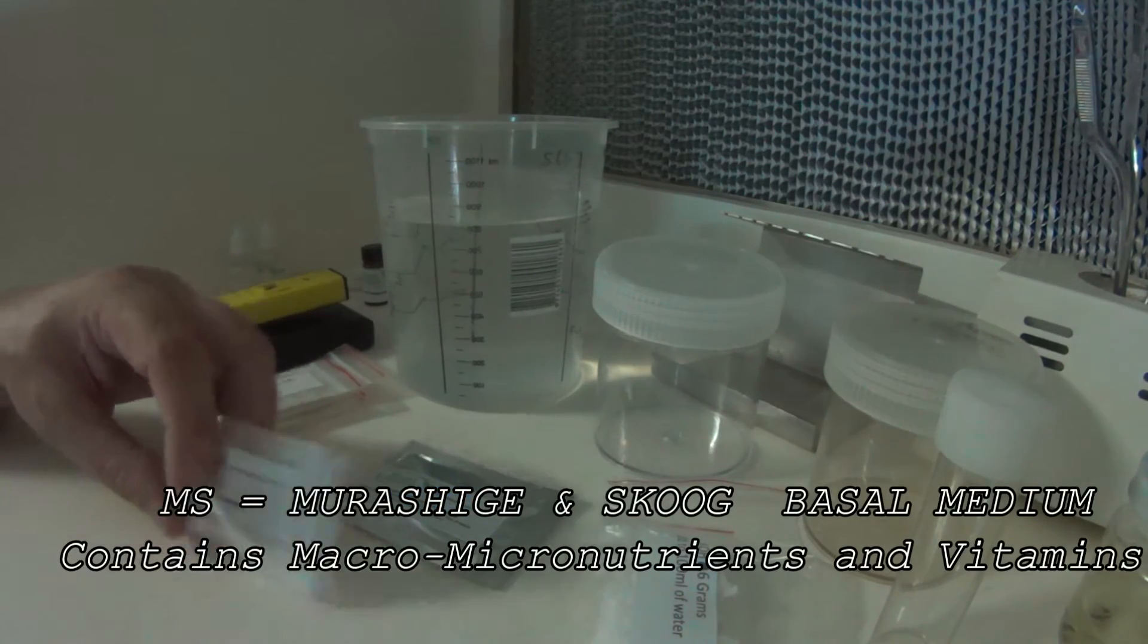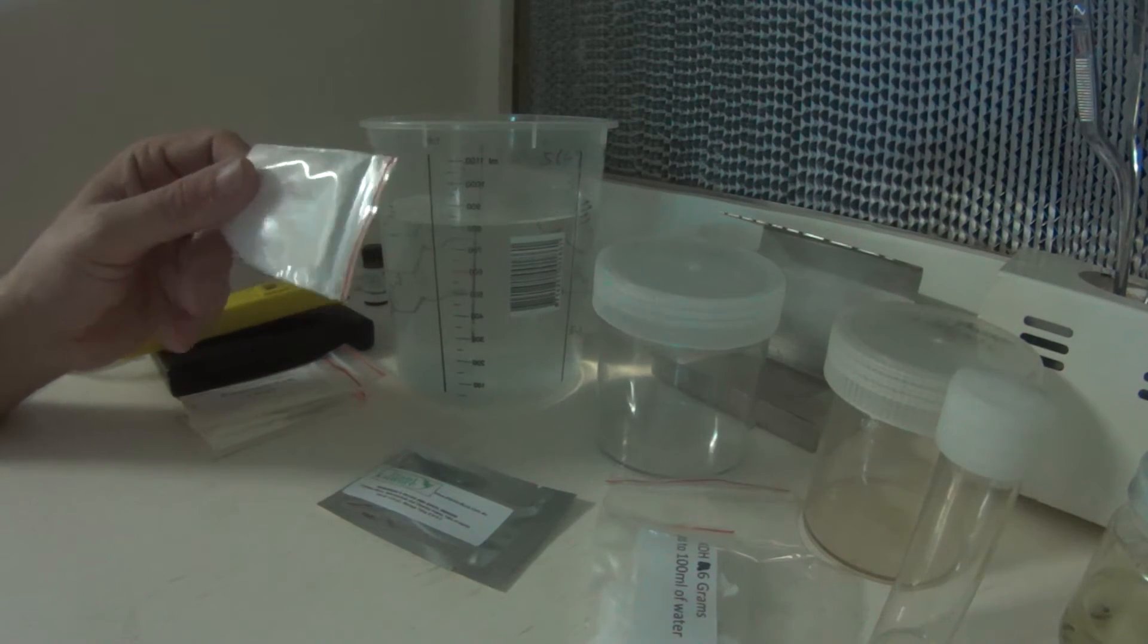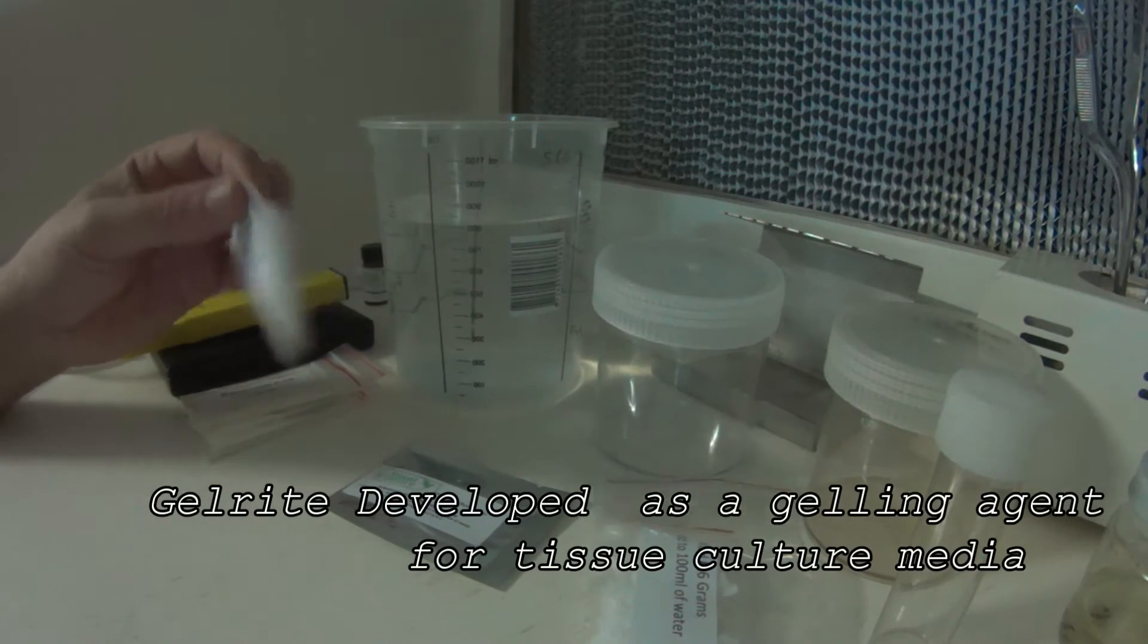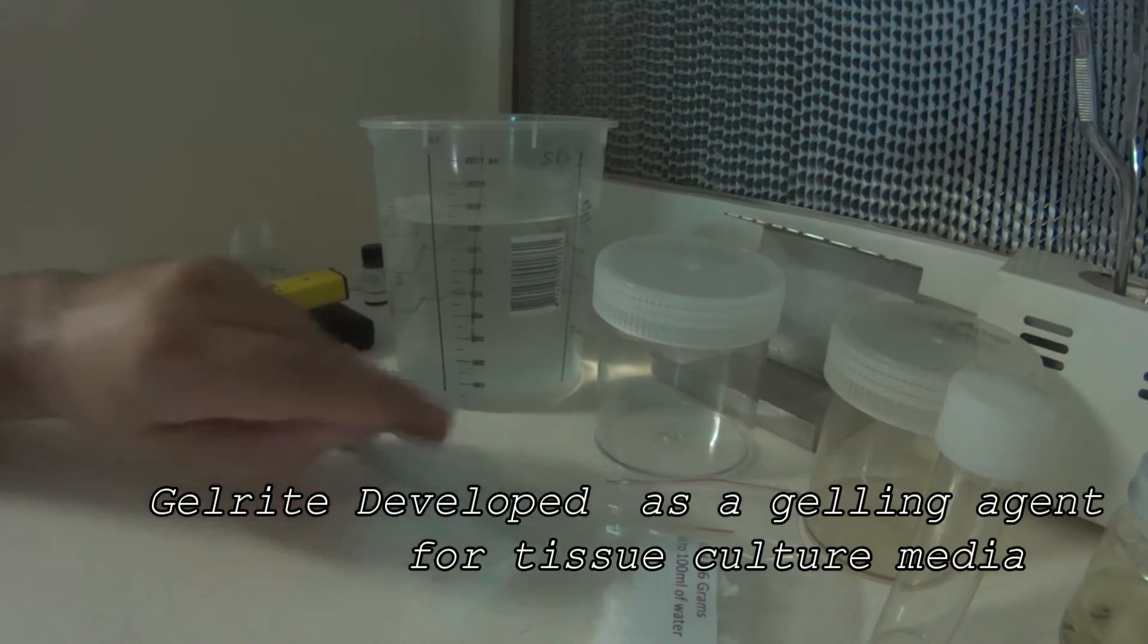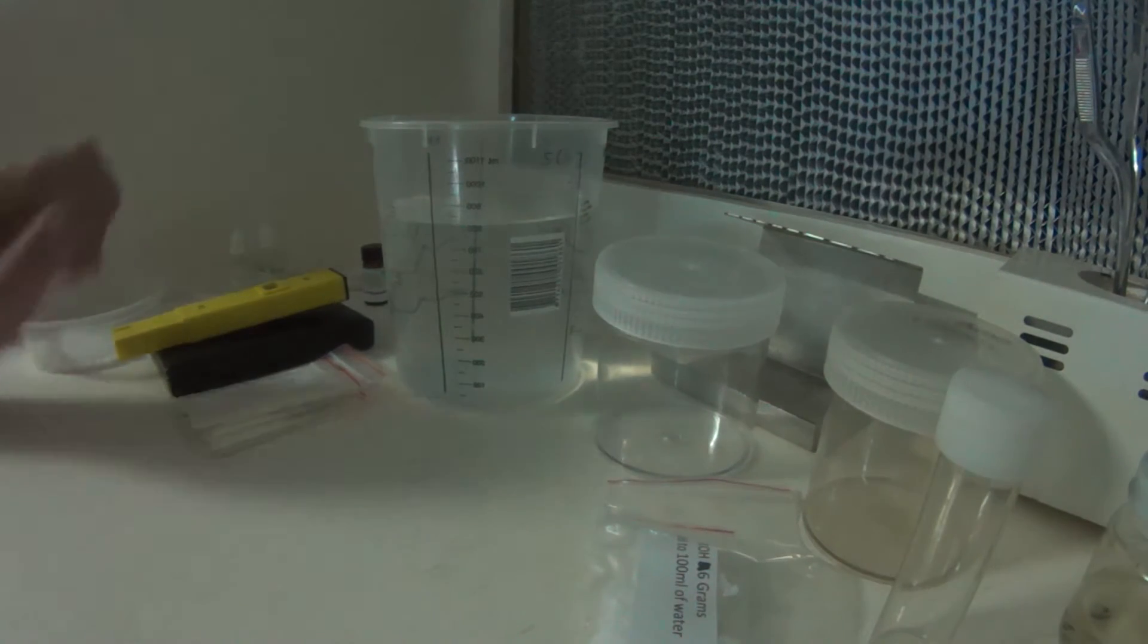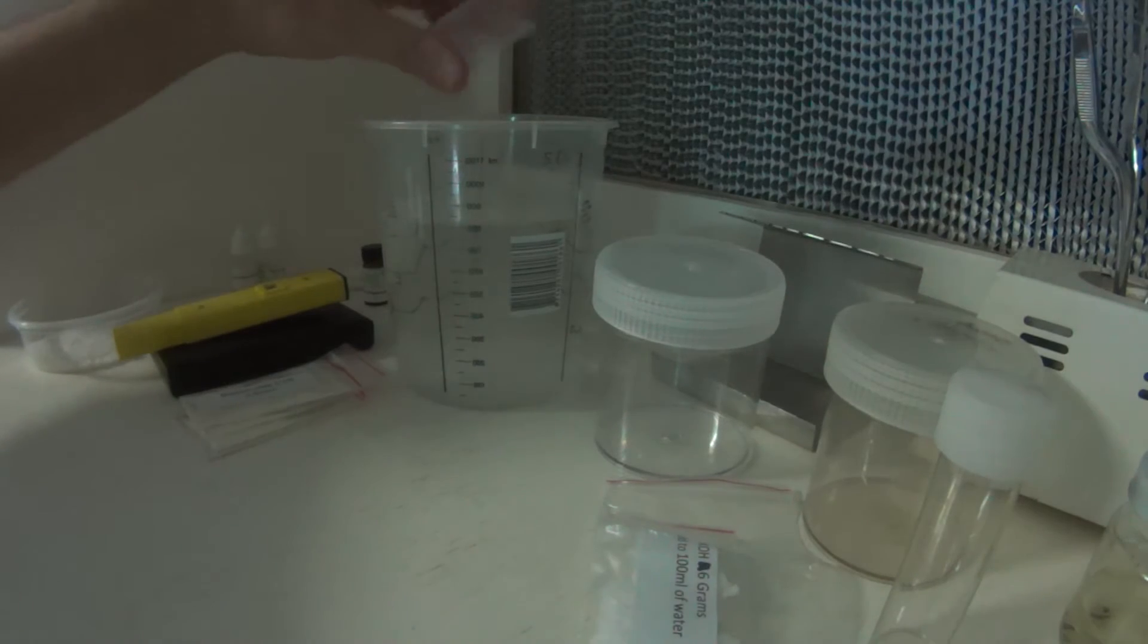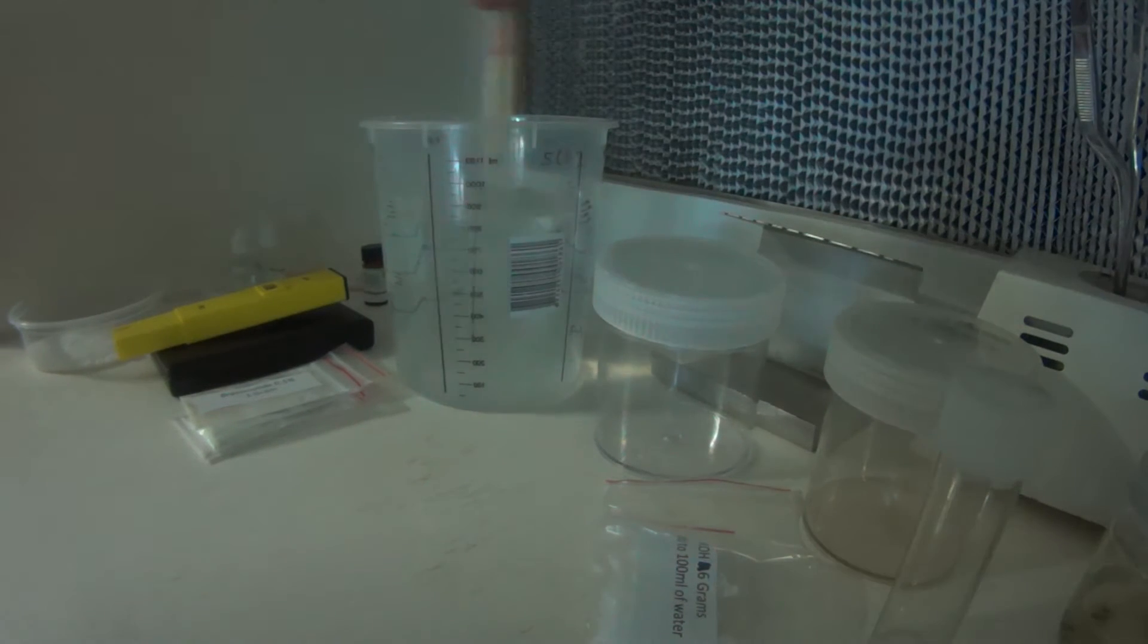Also we supply in the kit 4g of Gelrite, this is enough to solidify one liter of media. So once again, the whole contents in. I've already got them weighed out over here, so get them out of the way, and we'll start. Here's our MS salts. There we go, now just give it a mix up.